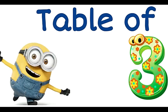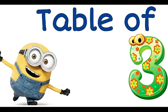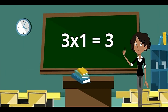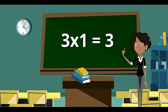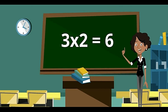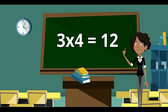Now we will be learning table of 3. 3 ones are 3. 3 twos are 6. 3 threes are 9. 3 fours are 12.